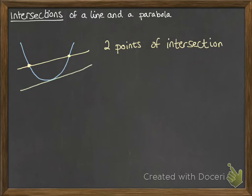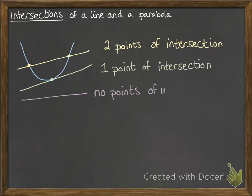We could have a line that only just touches it, so we would call that a tangent, and there would be one point of intersection. Or we could have the line that doesn't cross the parabola at all, where there'd be no points of intersection.